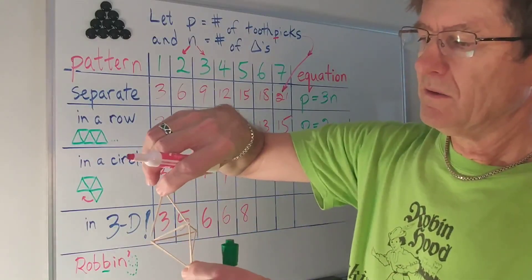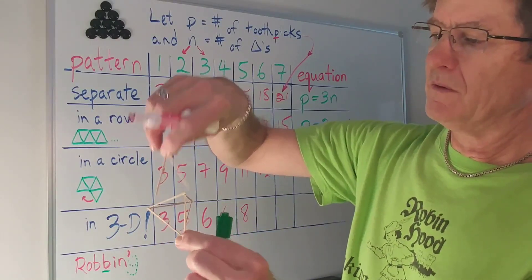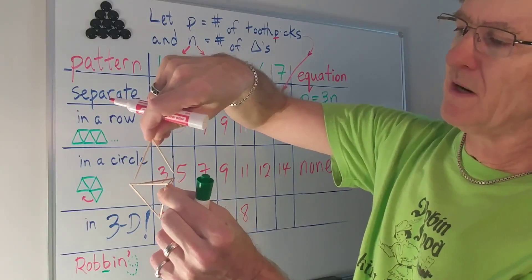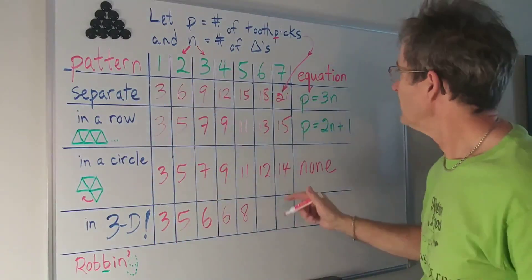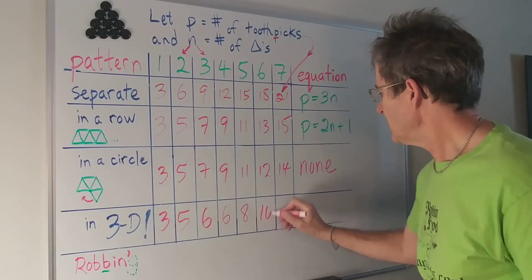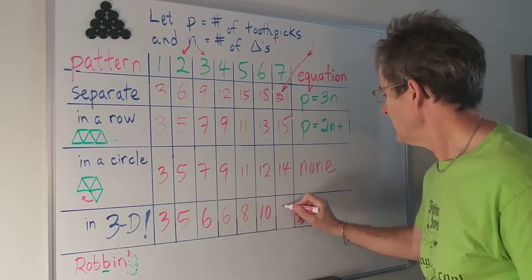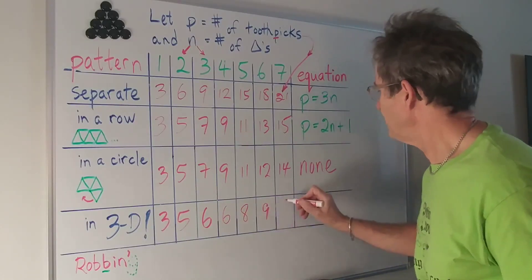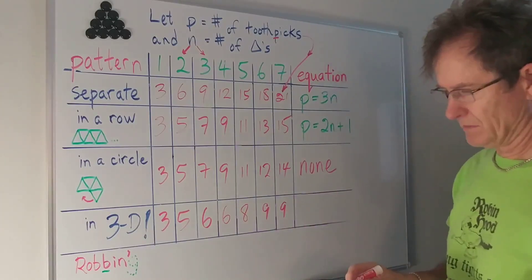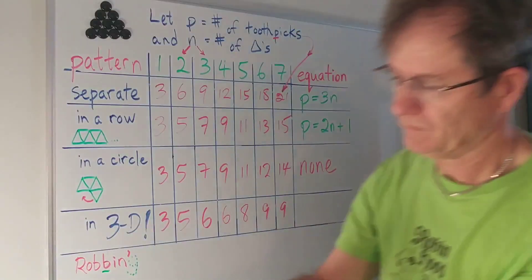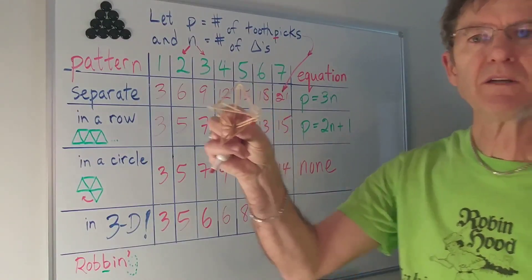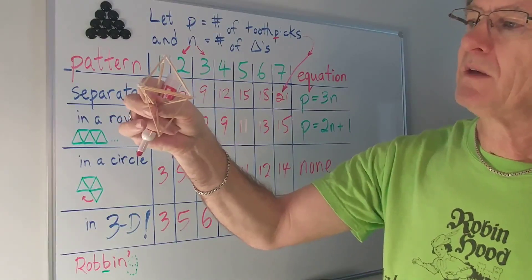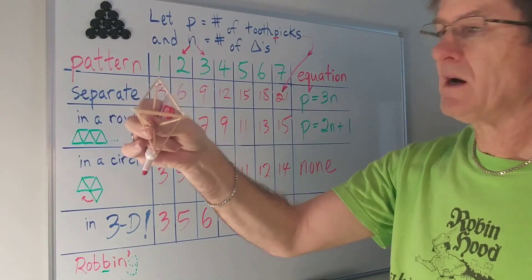And then if I once again put a toothpick between the two fingers on each hand I would make two more triangles. So it would take nine to make six and seven triangles. It'd be kind of like this. Now I apologize that my toothpicks aren't all the same but I get this situation right here. That's a total of nine toothpicks.